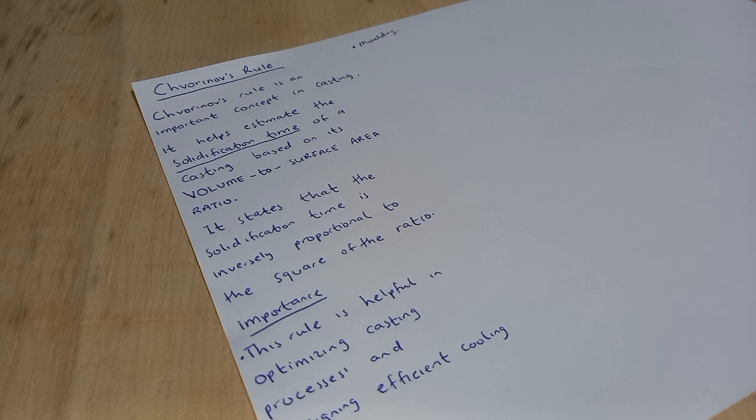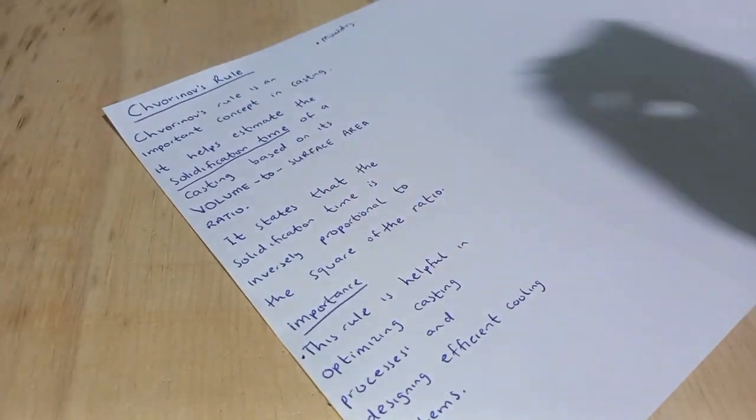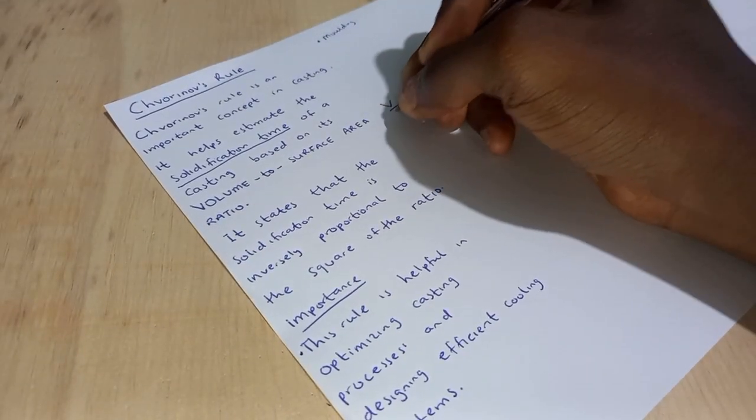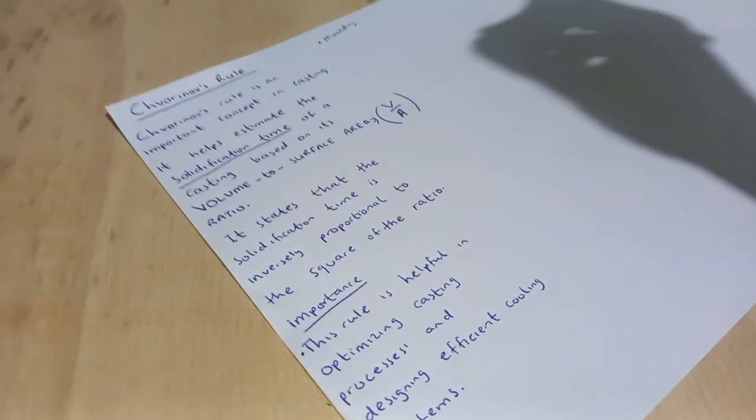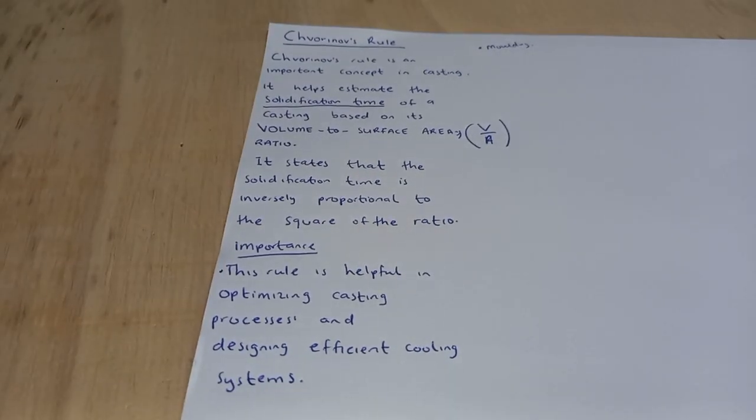And this is done based on the volume to surface area ratio, that's V over A. And this states that the solidification time is inversely proportional to the square of the ratio.